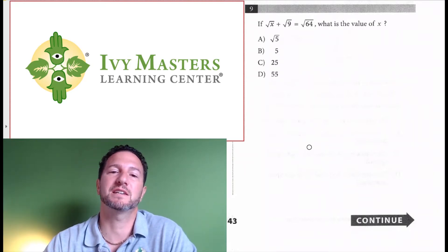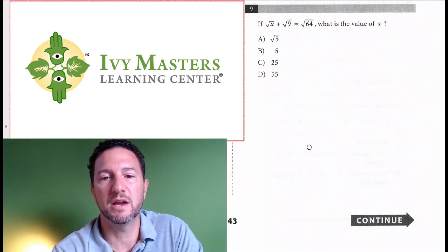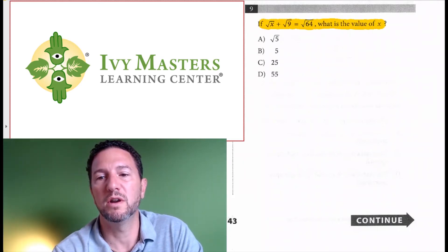Today we're going to look at Test 6, Section 3, Number 9, which reads: If the square root of x plus the square root of 9 equals the square root of 64, what is the value of x?